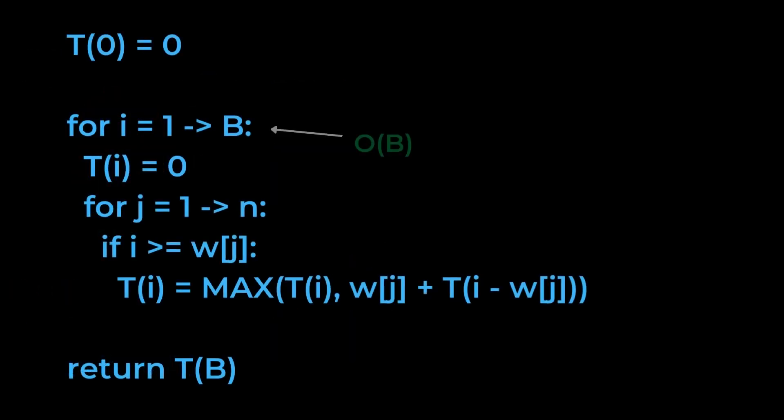The total runtime of this algorithm is therefore going to be O(n) multiplied by O(B), which is overall O(nB). This looks polynomial, and the algorithm itself feels familiar and polynomial, but it's actually exponential. To see why, we'll need to revisit the definition of big O runtimes.